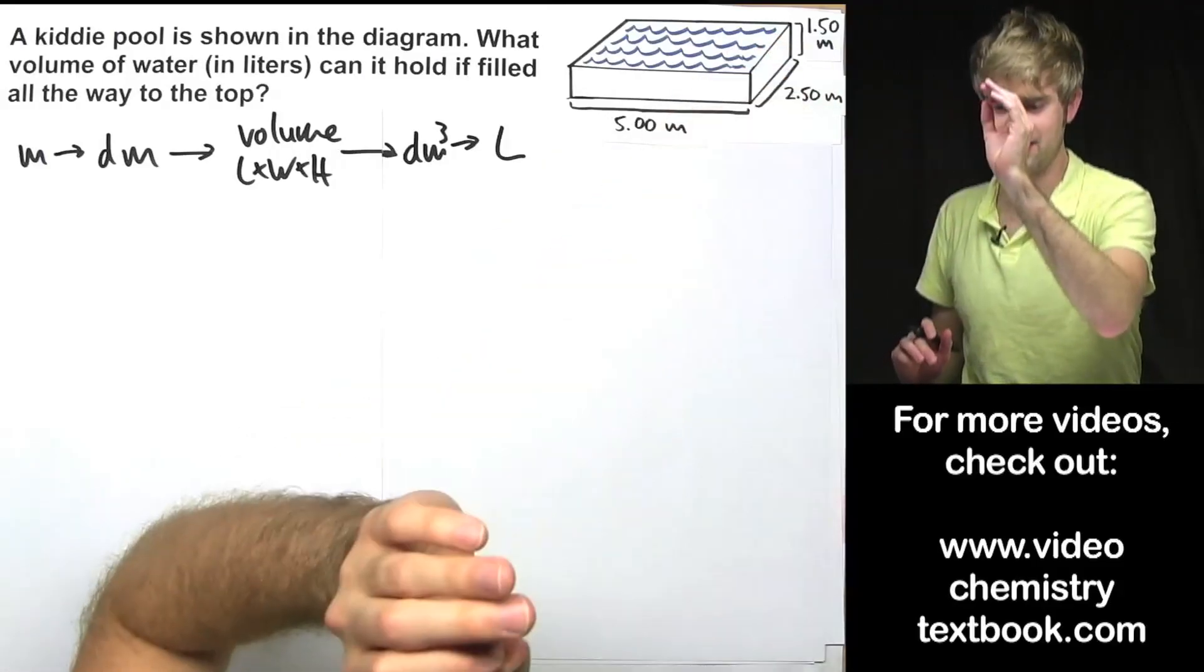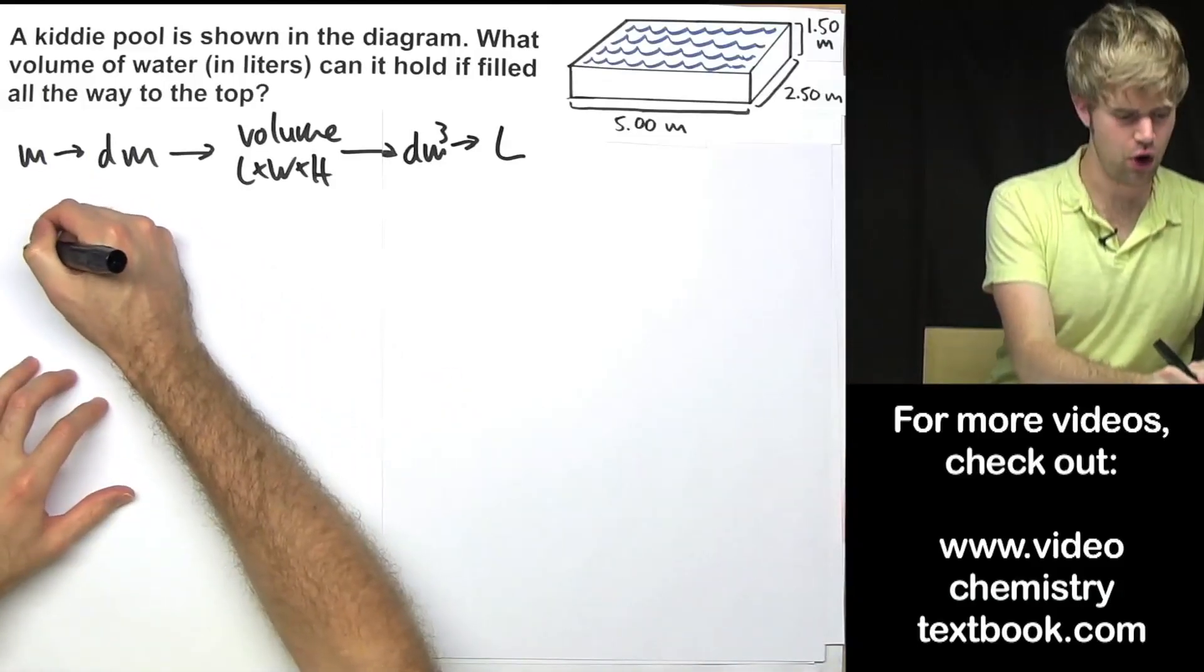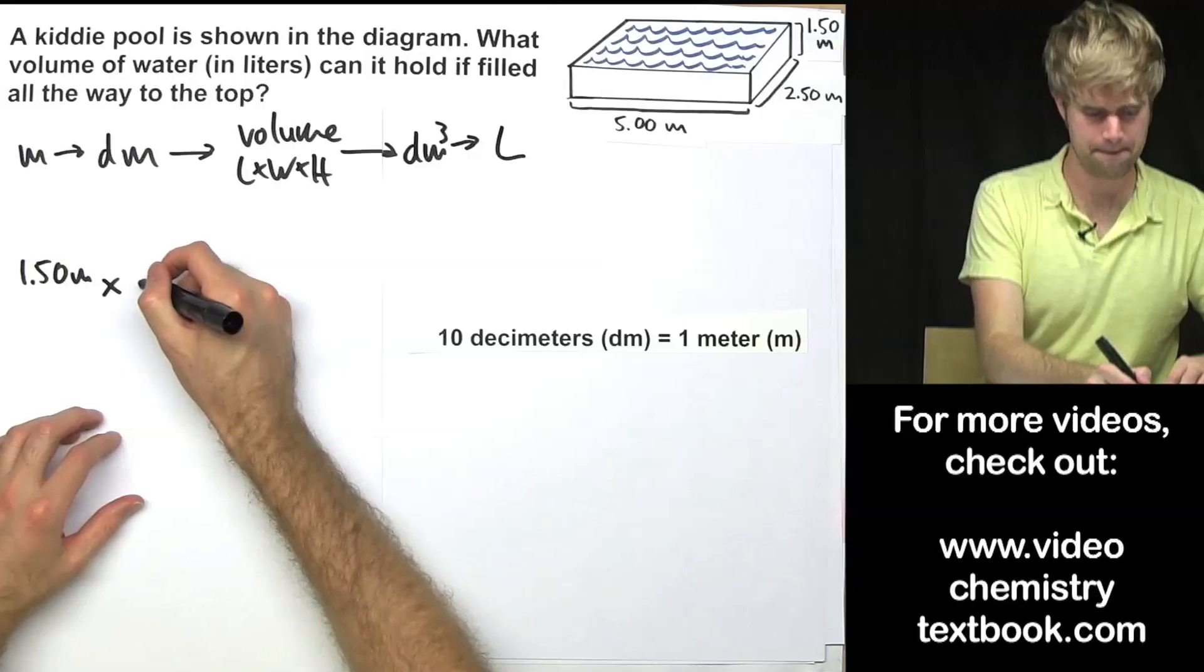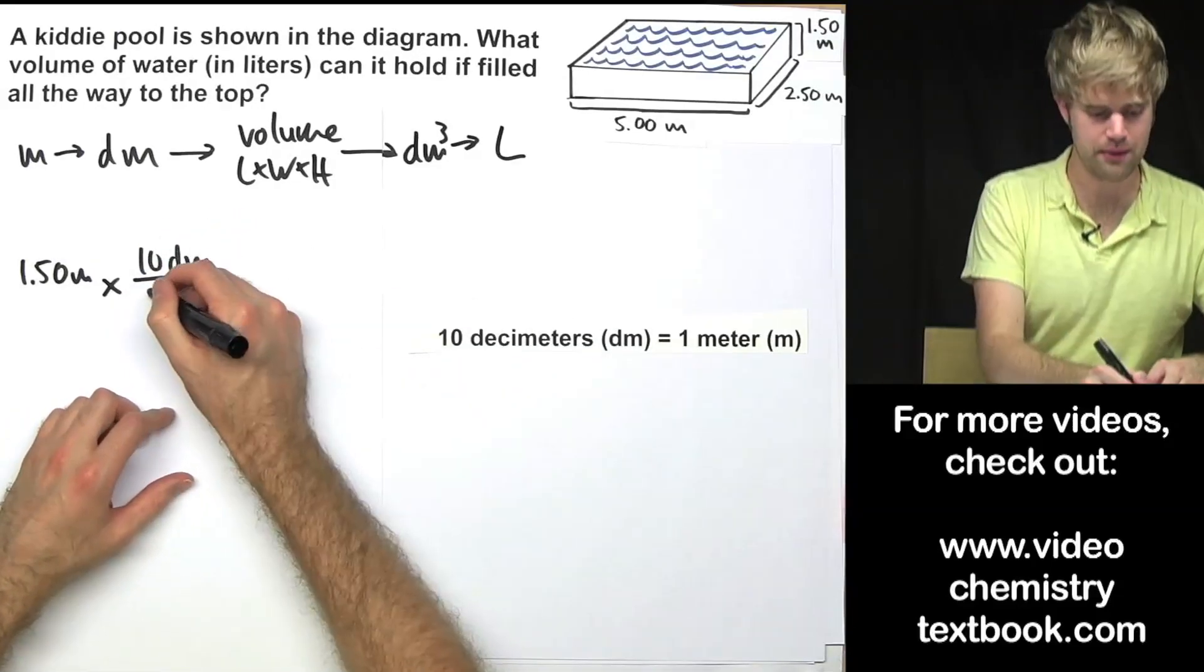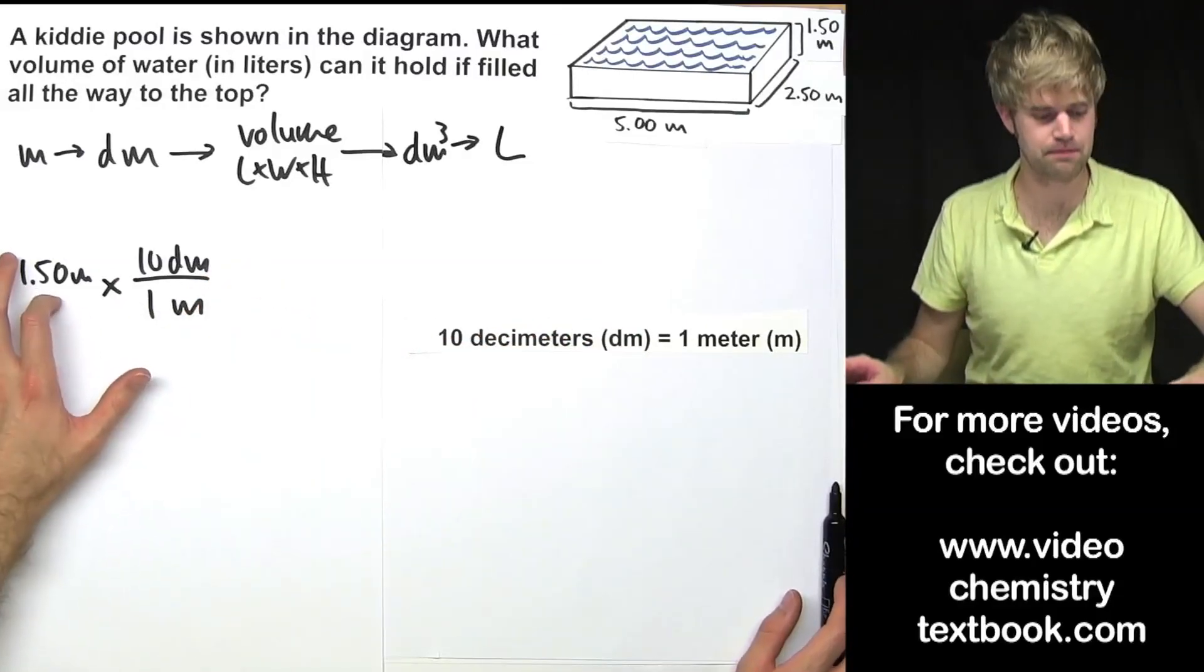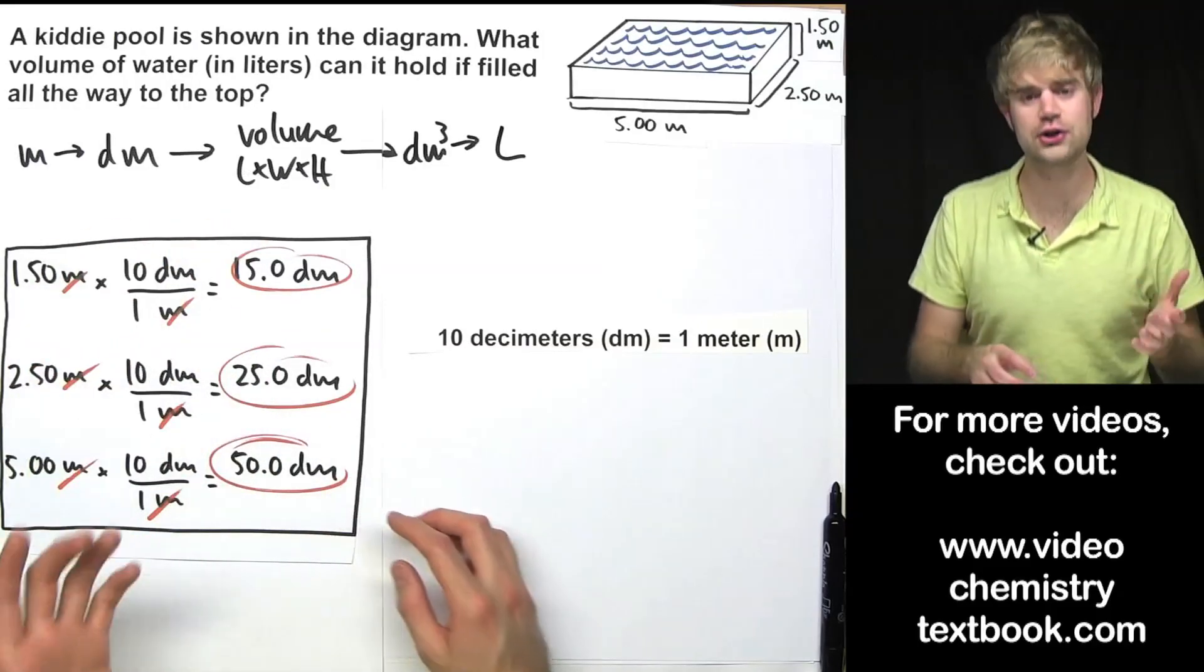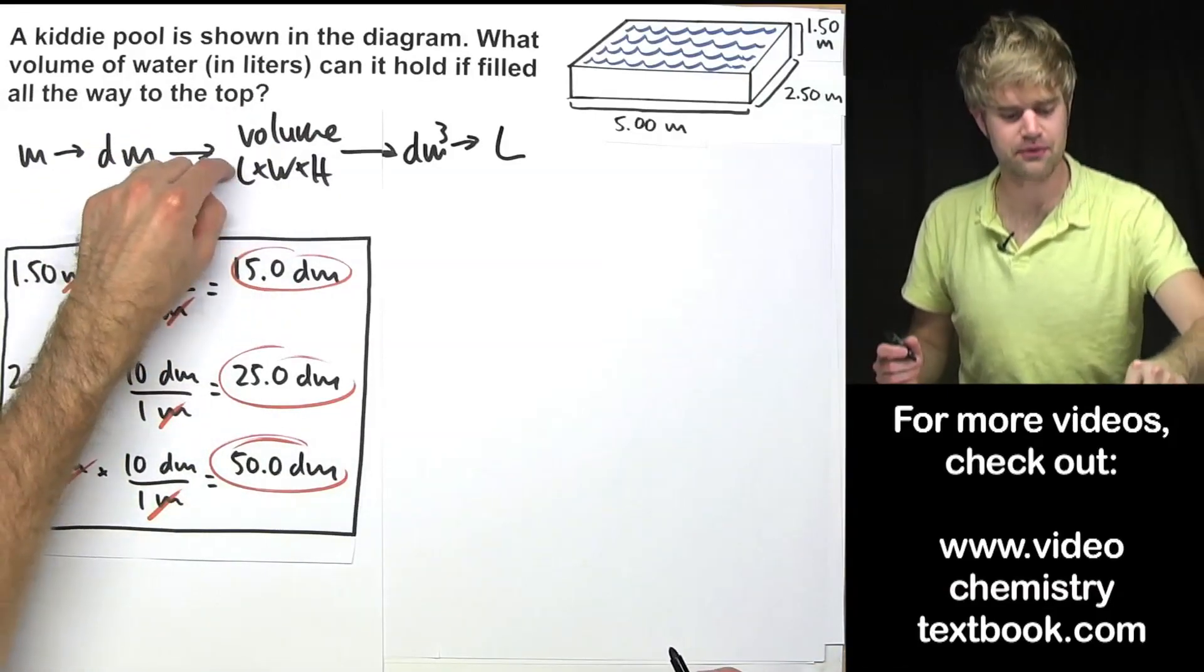So the first thing I'm going to want to do is I'm going to want to take these three lengths and convert them from meters into decimeters. So 1.50 meters times – I'm going to use this as a conversion factor – 10 decimeters on the top, 1 meter on the bottom. There are 10 decimeters in each meter. So what I'm doing is I'm multiplying this by 10. I'm not going to bore you with the process of all of this. So here is my three lengths in meters converted to decimeters. I've essentially multiplied each one of them by 10.